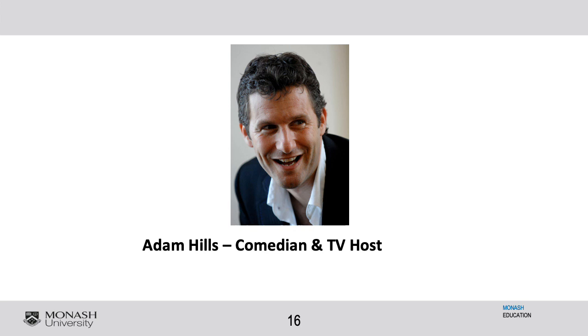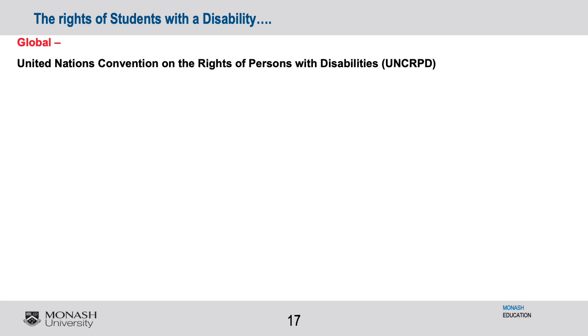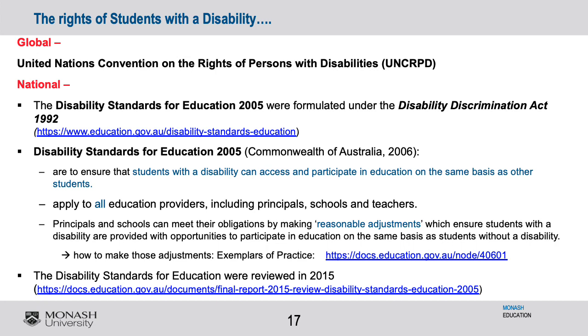Adam Hills is a famous Australian host in Britain. Having a disability, if that's your diversity, need not necessarily hold you back. Under the United Nations Convention on the Rights of Persons with a Disability, every person has a right to learn, to access facilities, to access services, to access education. We have the Disability Standards for Education in Australia, which really does articulate these rights.